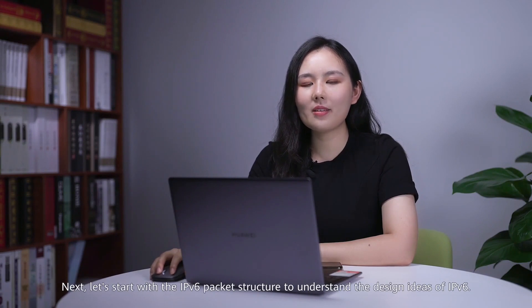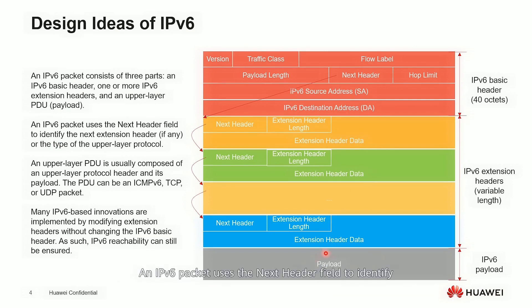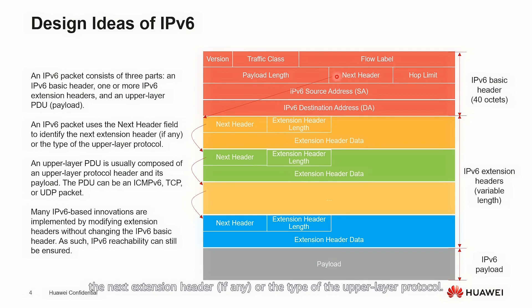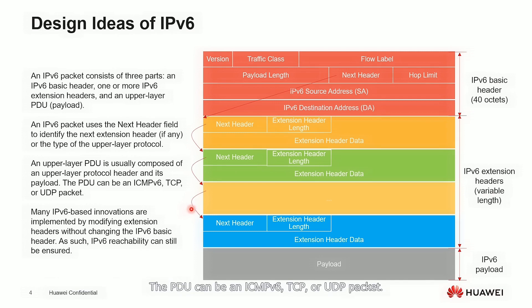Let's start with the IPv6 packet structure to understand the design ideas of IPv6. An IPv6 packet consists of three parts: an IPv6 basic header, one or more IPv6 extension headers, and an upper-layer PDU. An IPv6 packet uses the next header field to identify the next extension header or the type of upper-layer protocol. If multiple extension headers are used, the next header field indicates the type of the next header that follows. An upper-layer PDU is usually composed of an upper-layer protocol header and its payload. The PDU can be an ICMPv6, TCP, or UDP packet.